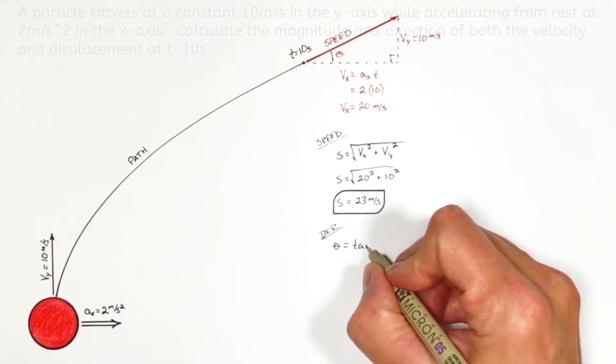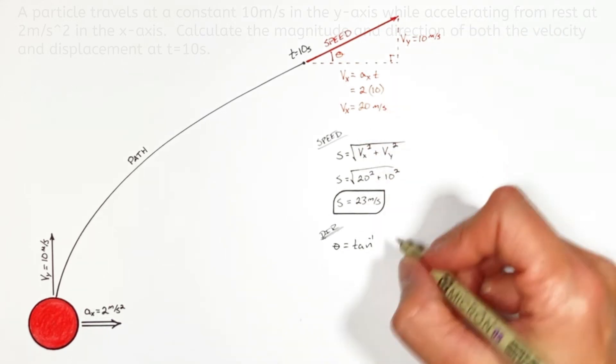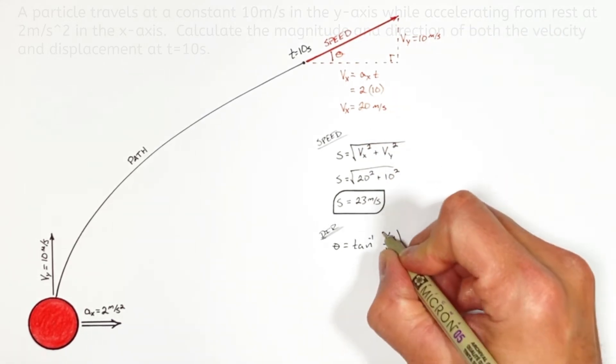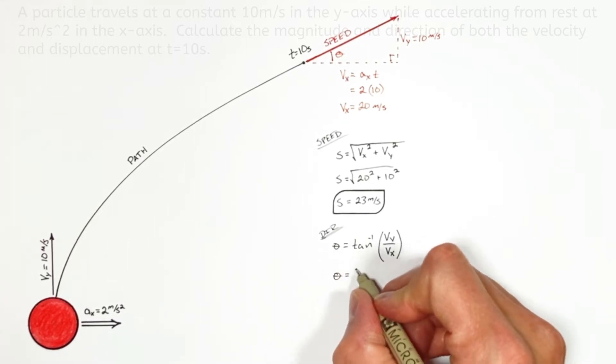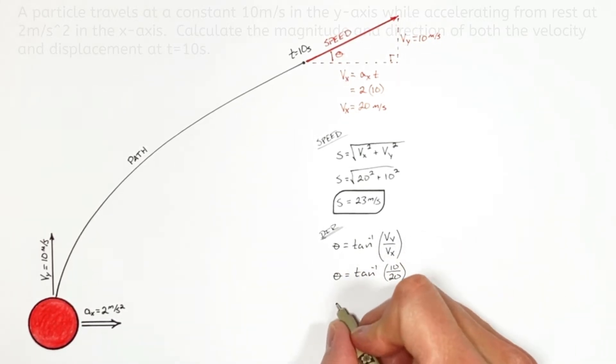That angle is given by the inverse tangent of the opposite over the adjacent side or Vy over Vx. So again substituting in the components of velocity in the x and y axes we find this ball is moving 27 degrees relative to the x-axis.